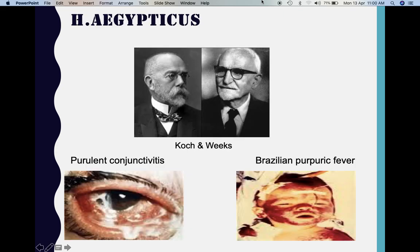That was all about Haemophilus influenzae type B. Coming to the next species, Haemophilus aegypticus: this organism is also known as the Koch-Weeks bacillus, named after the two individuals who identified it. It is known to produce purulent conjunctivitis and also Brazilian purpuric fever.